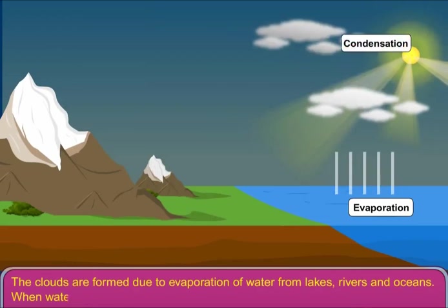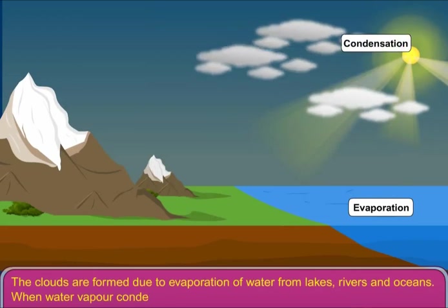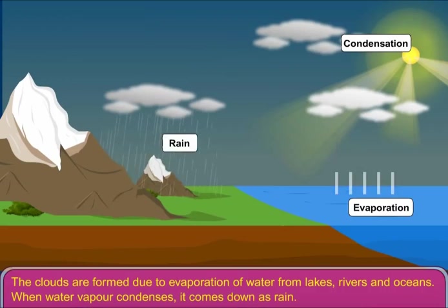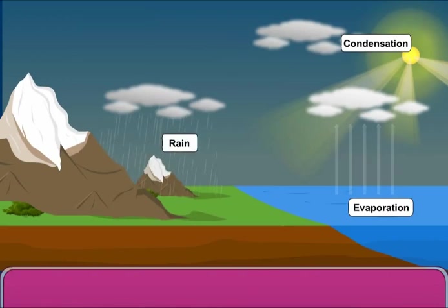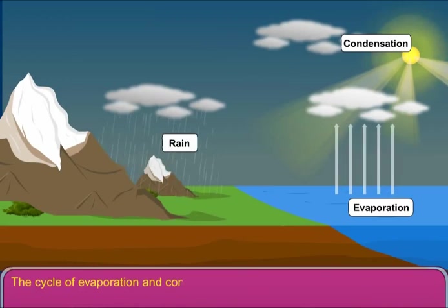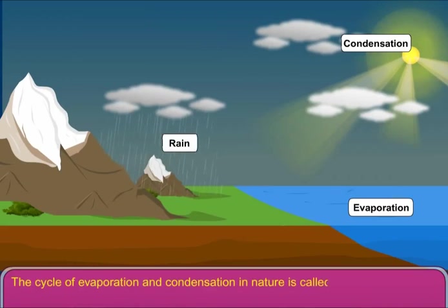When water vapor condenses, it comes down as rain. The cycle of evaporation and condensation in nature is called the water cycle.